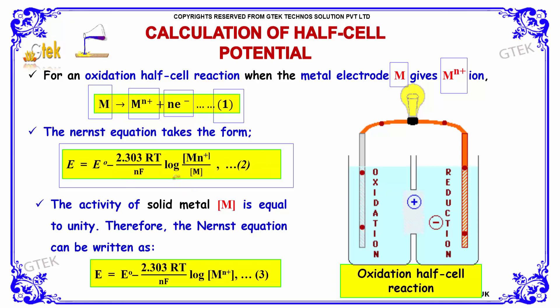The activity of solid metal M is equal to unity. Therefore, the Nernst equation can be written as E = E° - (2.303RT)/(nF) log[Mn+], indicated as equation 3.